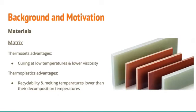Moving on to the matrix, there are two major types of resin matrix materials: thermosets and thermoplastics. Thermosets can cure at low temperatures and have lower viscosity, which allows infusion and high processing speeds. Polyester and epoxy resins are examples of thermosets used in the blade manufacturing industry. Thermoplastics, on the other hand, can be recycled and their melting temperatures are lower than their decomposition temperatures, which enables them to be reshaped upon melting. Comparing the two, thermoplastics have higher fracture toughness than thermosets, whereas thermosets have better fatigue behavior than thermoplastics.